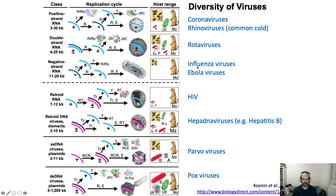The influenza viruses are also RNA viruses. The Ebola viruses are also single-stranded RNA viruses. HIV is a famous retrovirus — it has an RNA genome but converts the RNA into DNA inside the host, which can make it very difficult to treat. The hepatitis B virus is a different kind of retrovirus. You may have heard of parvoviruses, especially if your pet has contracted one. Those are DNA viruses, but they have a single-stranded DNA genome, which is pretty wild.